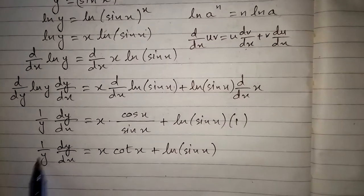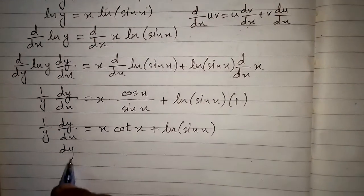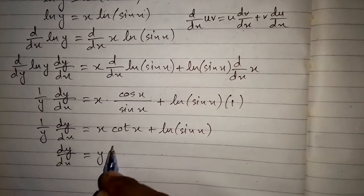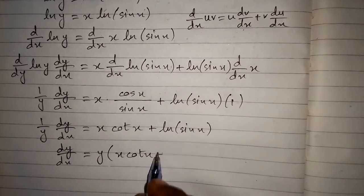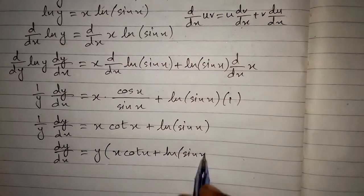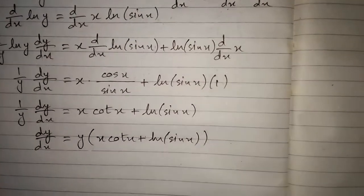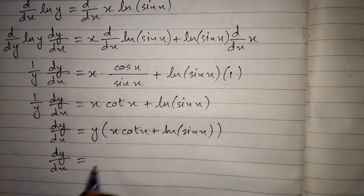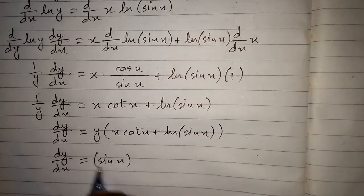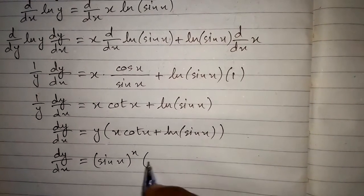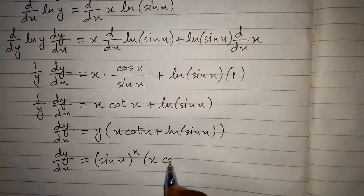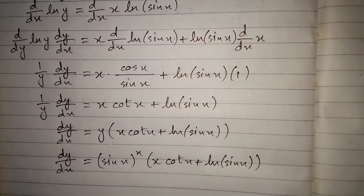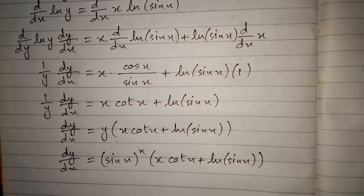We take y to the other side: dy by dx is equal to y times x·cot x plus ln of sin x. Now we substitute the value of y, which is sin x raised to the power x, giving dy by dx equals sin x raised to the power x, times the quantity x·cot x plus ln of sin x. This is the required derivative.